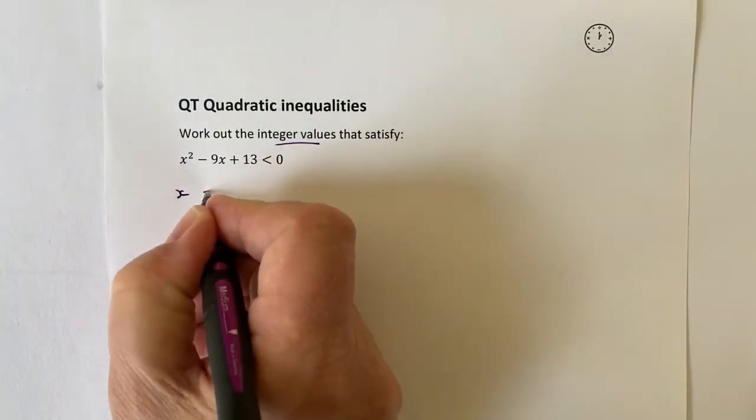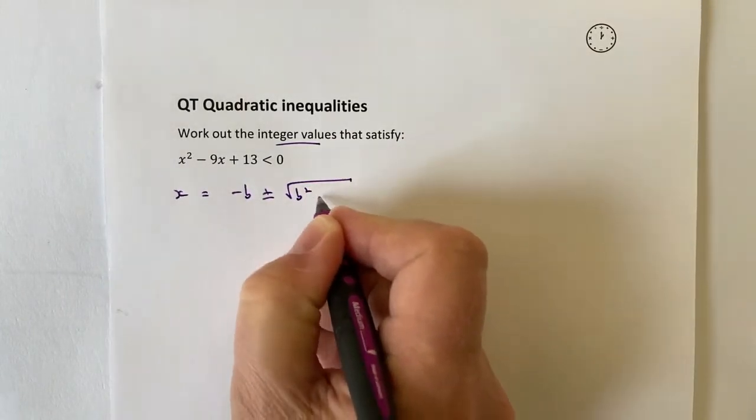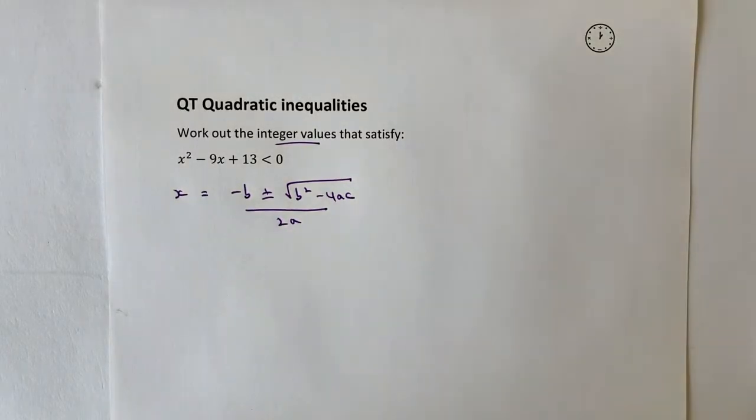If I write this out, I've got x equals minus b plus or minus the square root of b squared minus 4ac all over 2a. Now if you're not sure at this point, please have a look at the playlist on the quadratic formula from the channel.